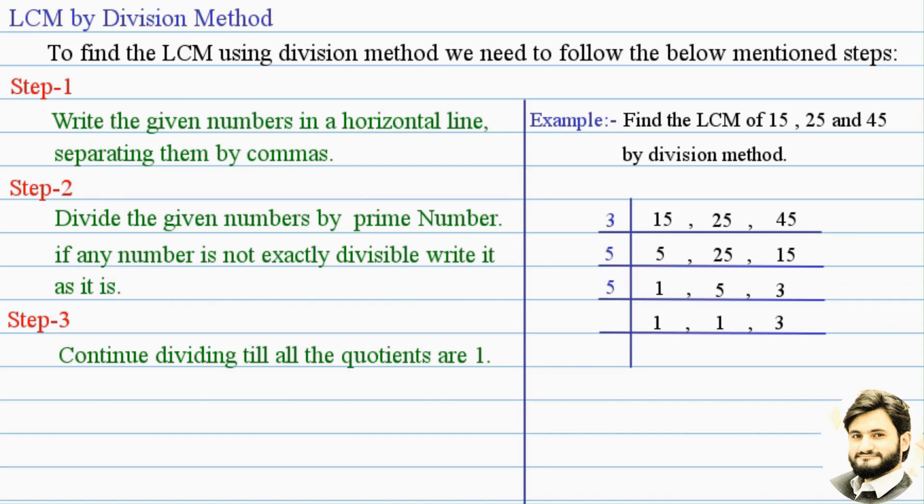6 1s are 5. So now divided by 3. 3 is a divisor. We get 1 comma 1. 3 1s are 3. Finally, we get all the quotients are 1.